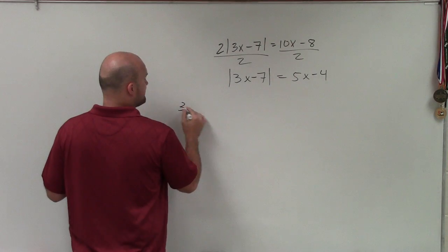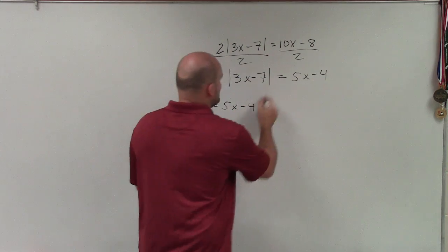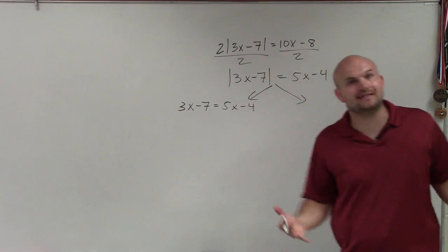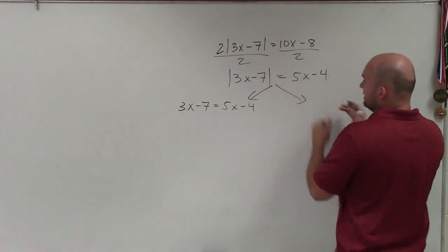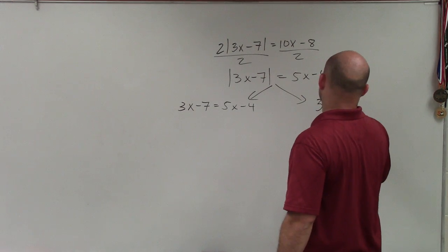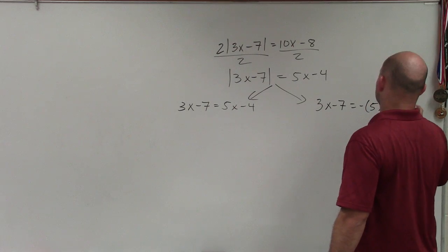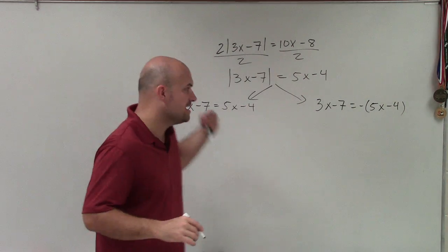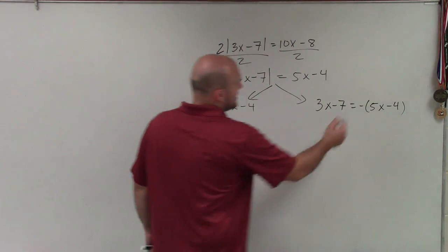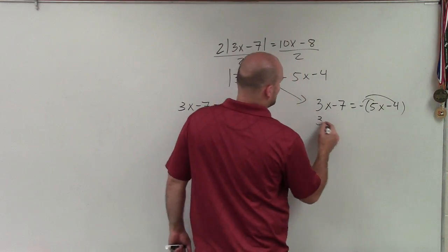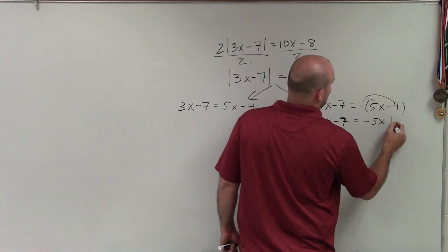My first case would be 3x minus 7 equals 5x minus 4. When you create your two cases, you're basically eliminating the absolute value, because we're saying the absolute value could equal a positive or a negative value. The second case equals negative 5x minus 4. Notice how I included the parentheses, because it's not just negative 5x — it's negative 5x minus 4, so I have to distribute. Therefore, it really is negative 3x minus 7 equals negative 5x plus 4.